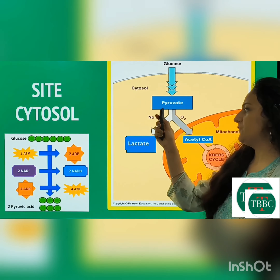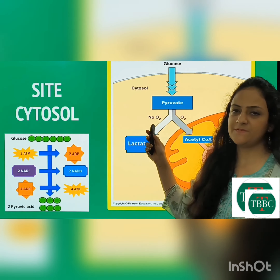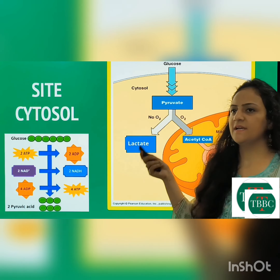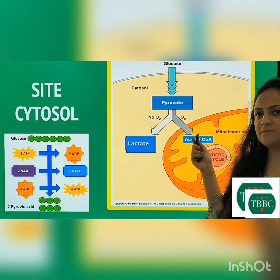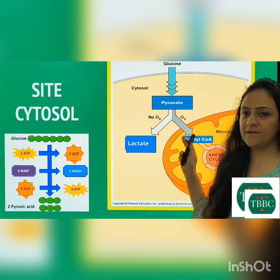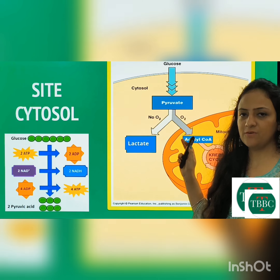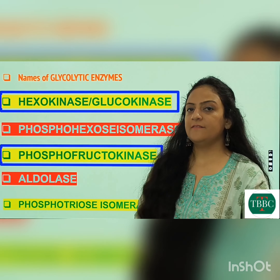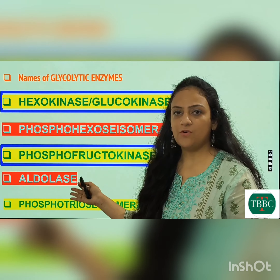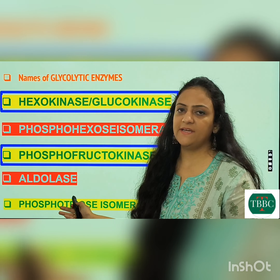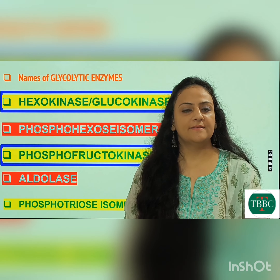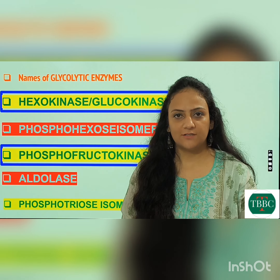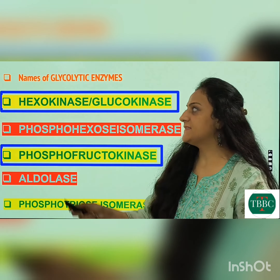But if oxygen is unavailable, or in tissues which lack mitochondria — such as erythrocytes, lens, and retina — lactate is formed. When pyruvate forms lactate in the absence of oxygen, it is known as anaerobic glycolysis. In the presence of oxygen, pyruvate enters the mitochondria and forms acetyl-CoA — that is aerobic glycolysis.